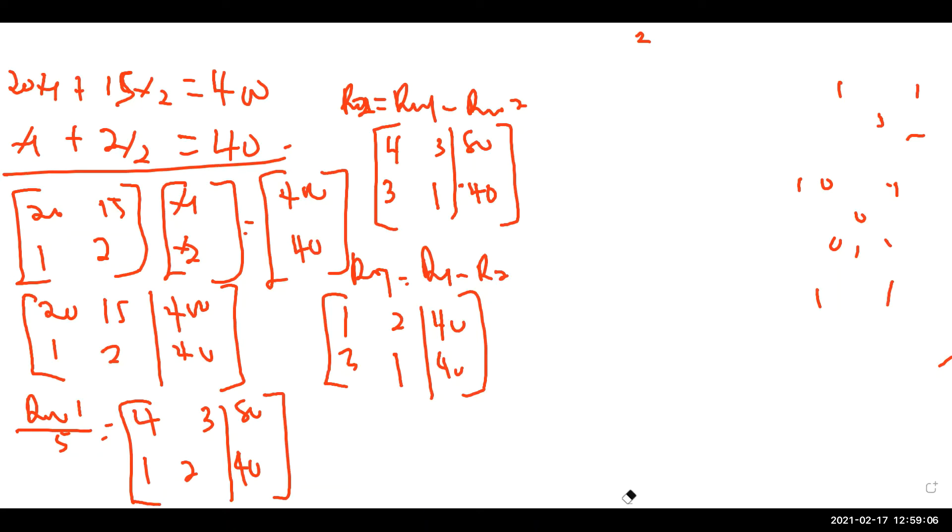So we can go further to say that, you can decide to do anything. Let's look at row one again. I can say, let's say two row two minus row one. Let's see what we have. So we are coming to this side. Two row two, so two, this will give you five, this will give you one.